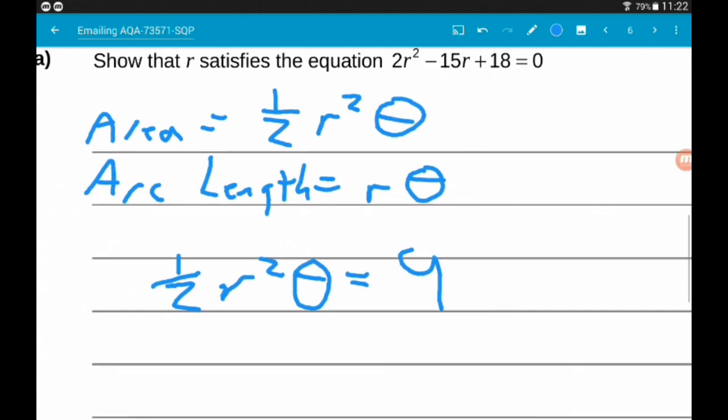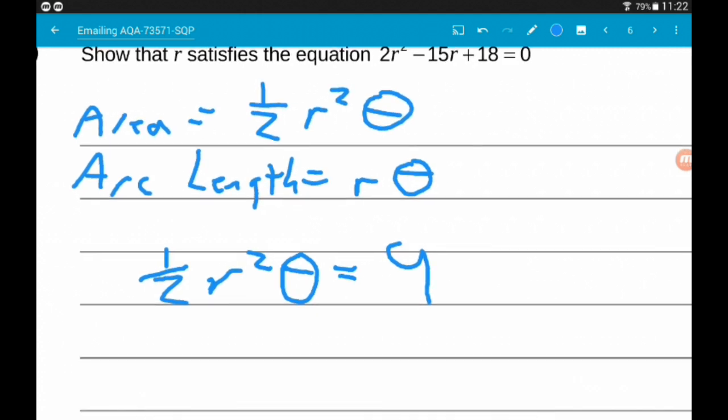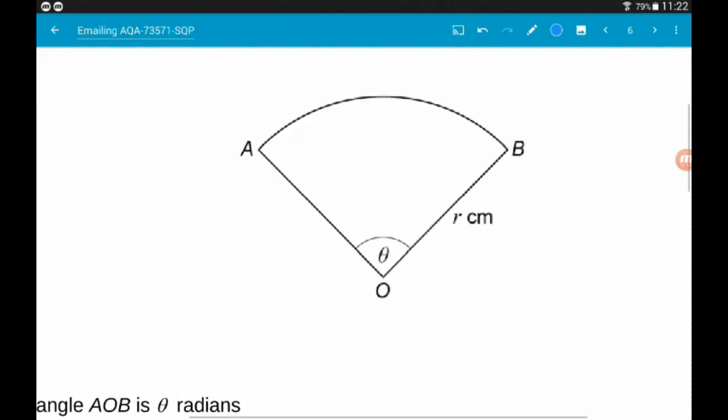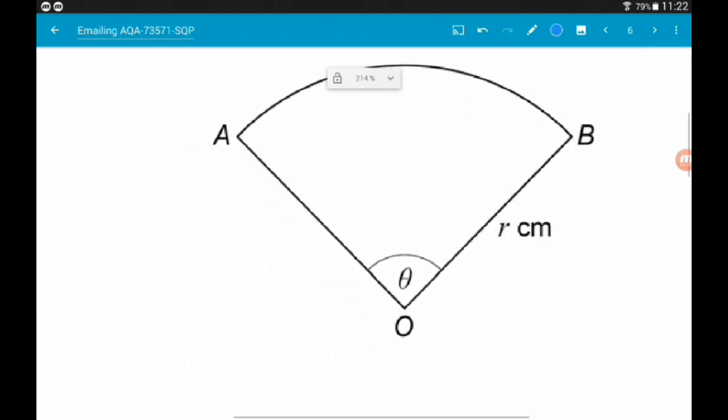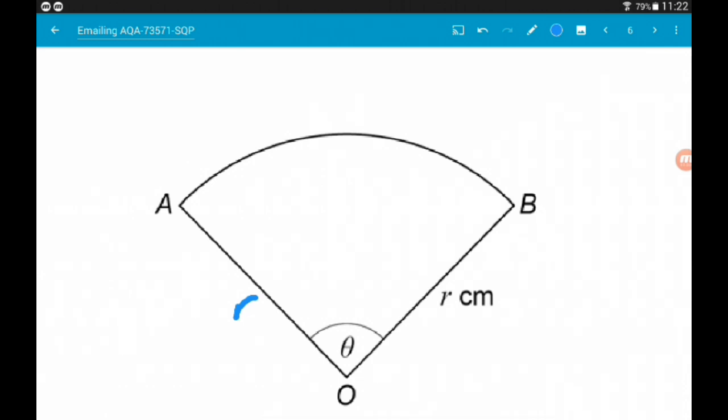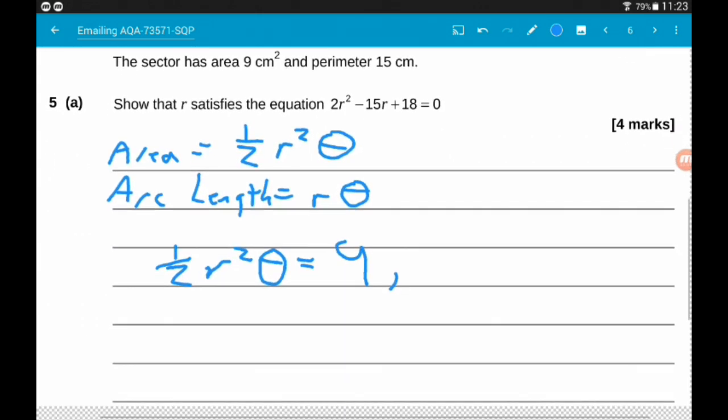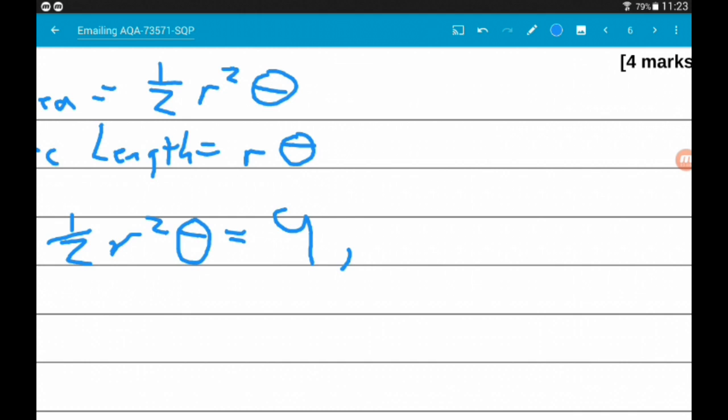Now, we also know the perimeter. The arc length is Rθ. So the perimeter of the whole thing is two lots of the radius and Rθ. So what we can say from that is that 2R + Rθ = 15.